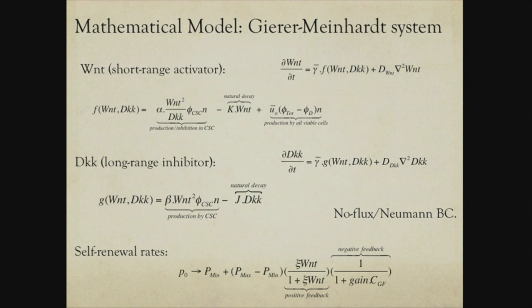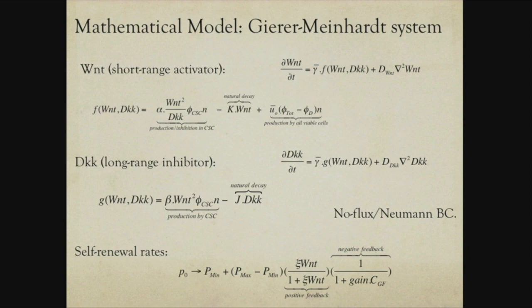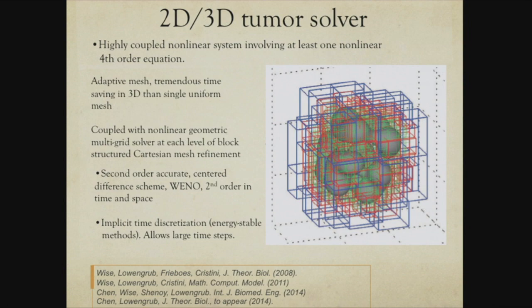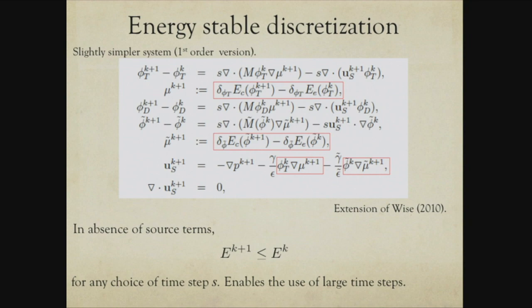Using a classical Gierer-Meinhardt model where production is tied to nutrients being sufficiently large, one can introduce this field and modify the self-renewal fraction to include positive feedback alongside the negative feedback. Combining these features gives a highly coupled nonlinear system with fourth-order equations. To simulate this in three dimensions requires efficient algorithms with adaptive mesh. We use finite difference nonlinear multigrid methods with implicit time discretization, using energy-stable methods — meaning the discretization ensures energy is non-increasing for any choice of time step if there were no source terms, allowing large time steps. The nonlinear multigrid method requires only local rather than global linearizations.